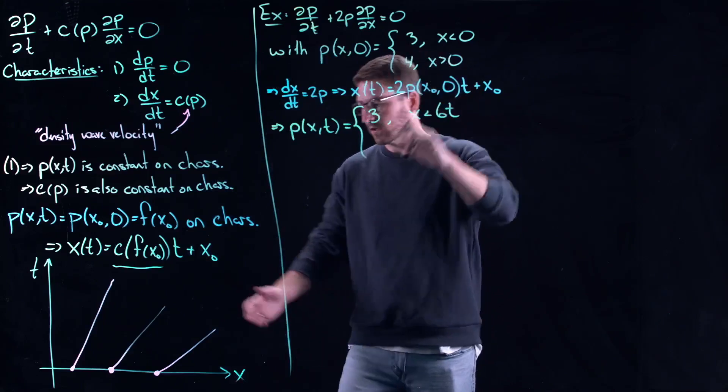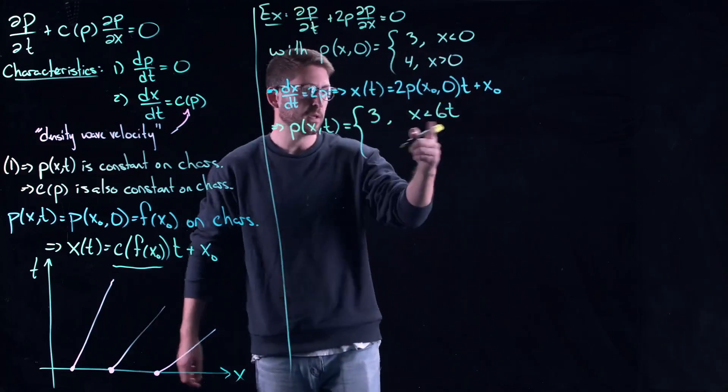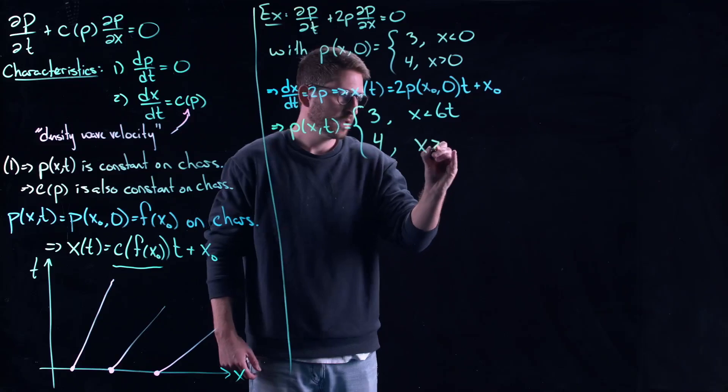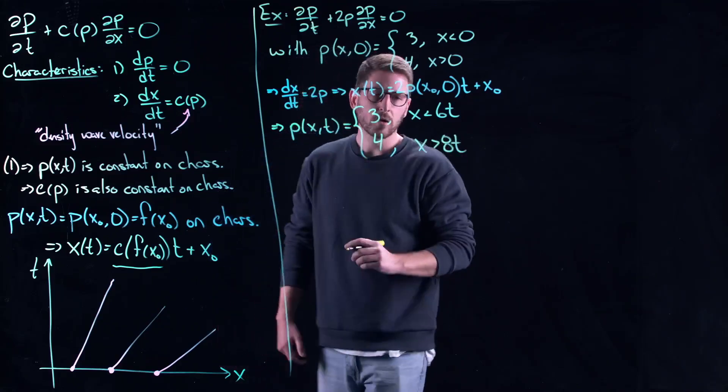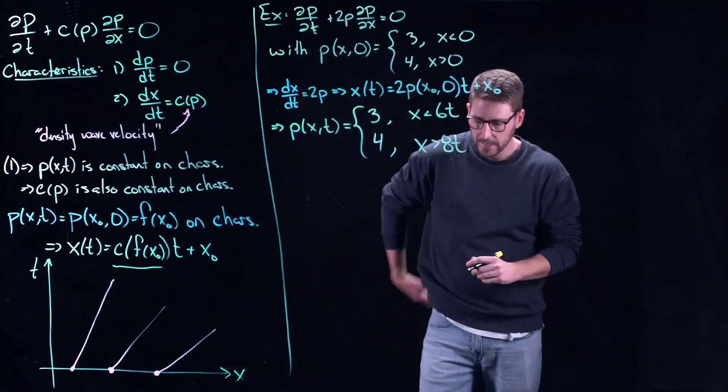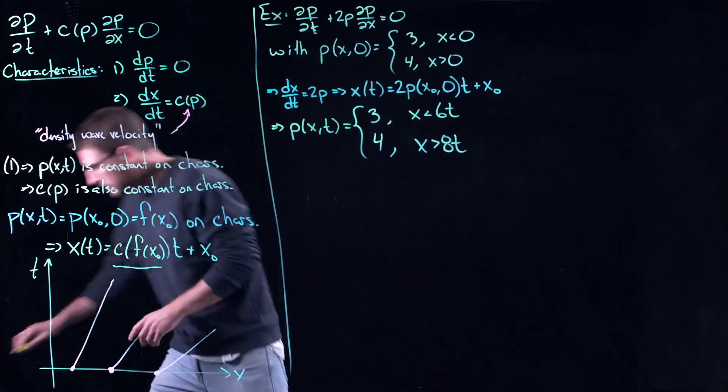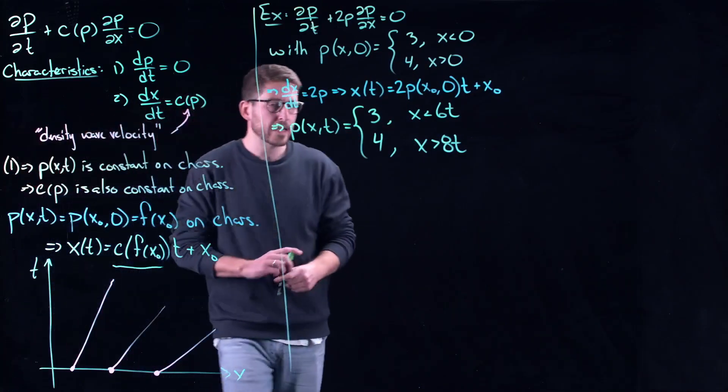The characteristics are moving, this is the separation at 0, but all the characteristics are moving in space and time. And then this gives me 4 if x is greater than 8t. So the question is, what is happening?